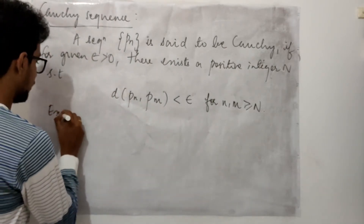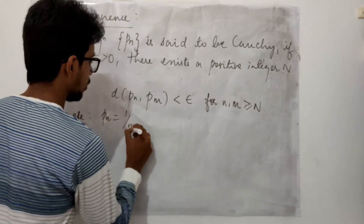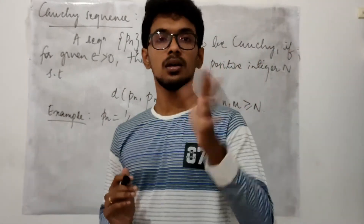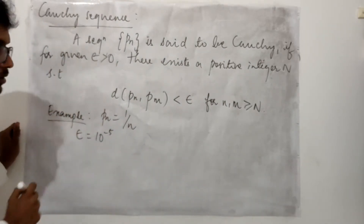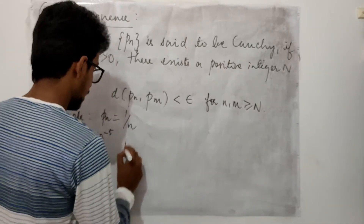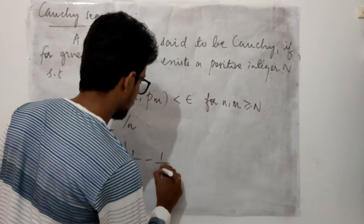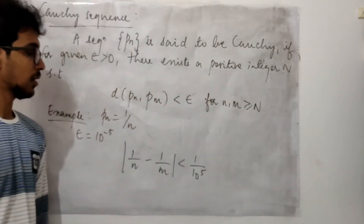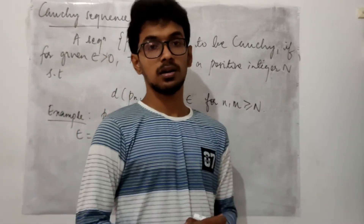Now let us see an example of a Cauchy sequence. Let me consider Pn to be 1/n. Here you may fix the epsilon value to be anything. Let me fix epsilon to be 10^(-5). After fixing epsilon to be 10^(-5), Pn is 1/n and Pm is 1/m. The absolute difference |Pn - Pm| = |1/n - 1/m| has to be less than 1/10^5. So the difference between these two terms has to be less than 1/10^5.